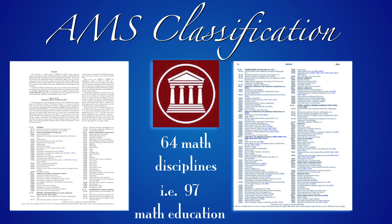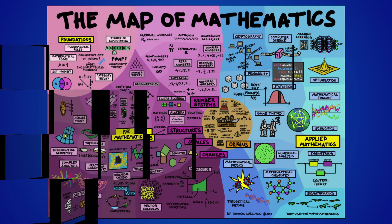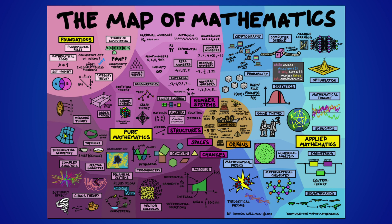There are many classifications possible. The EMS classification, for example, counts 64 disciplines — where not all numbers appear. Math education, for example, is entry 97. You can also find on the web attempts to draw the landscape of mathematics in one picture. It will actually be an assignment for next week to come up with your own map. It can cover only a narrow field, or the mathematics you are aware of, but it should have a couple of entries. This will also be a little test of collaborating with somebody else over distance.